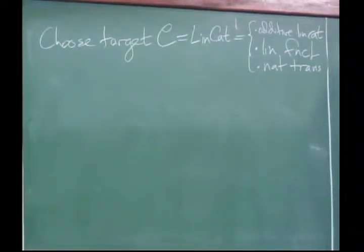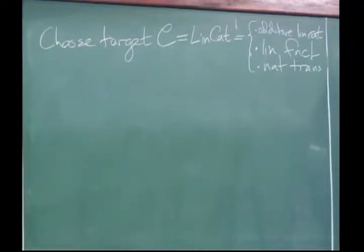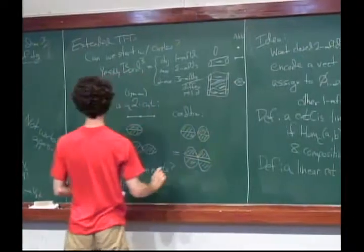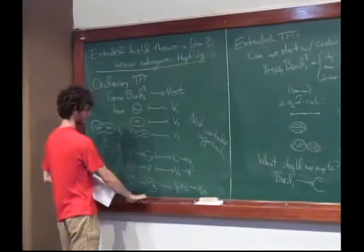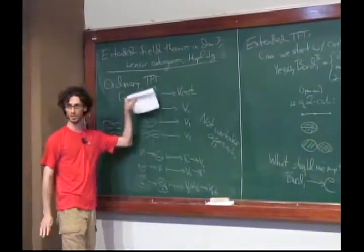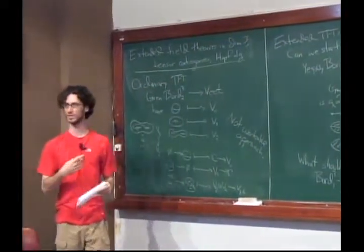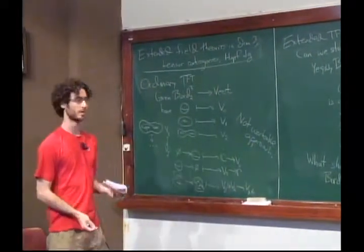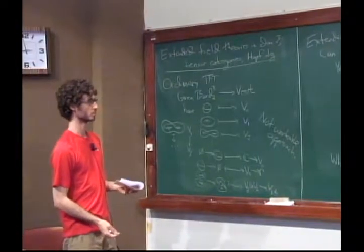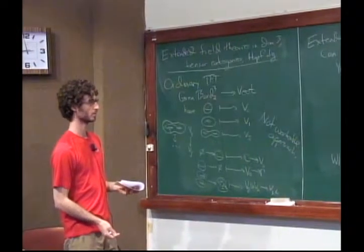We can choose the target two-category C to be what I'll denote LinCat. This thing has objects which are additive linear categories, morphisms which are linear functors, and two-morphisms which are natural transformations of linear functors. You can think back through and verify that this does implement what we wanted in terms of recovering this kind of data on closed two-manifolds and the three-manifold bordisms between them.